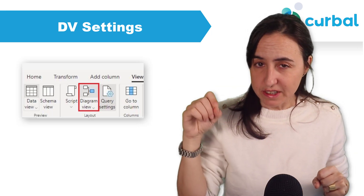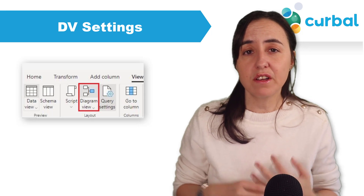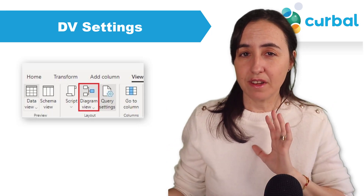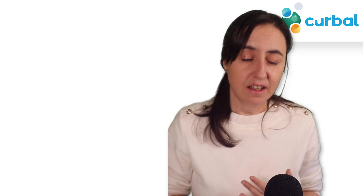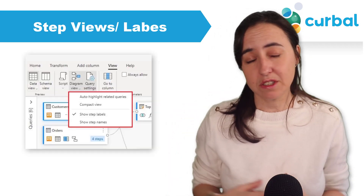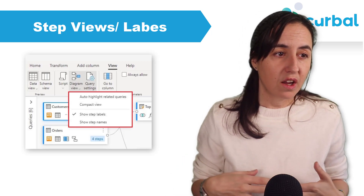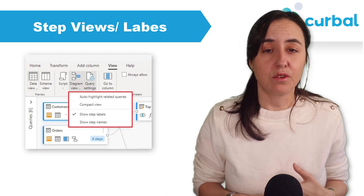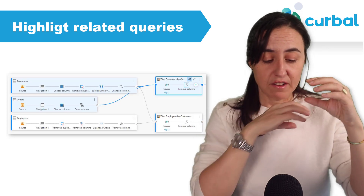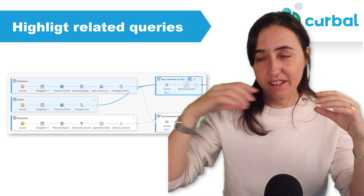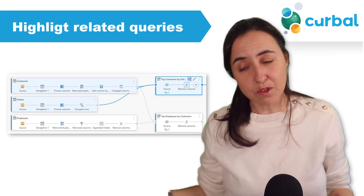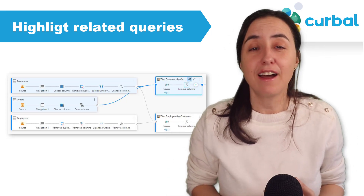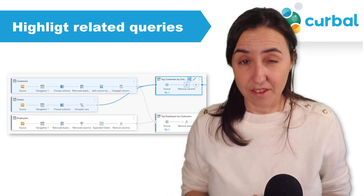If you click on the arrow pointing down, like any functionality in Power Query, you will get to a menu, and that's where they have put a lot of effort in this release. The first thing you can do is choose if you want to see step names or step labels. Also, you can click on a query and related queries get highlighted — for example, appended or merged queries — so you can see which queries are dependent on each other.